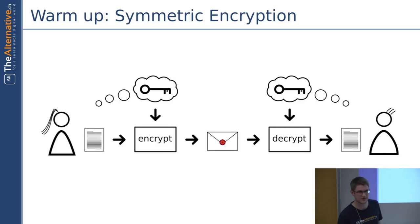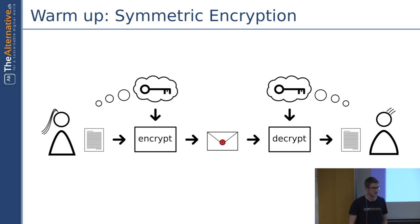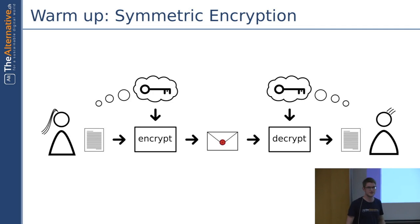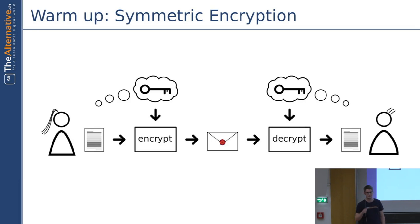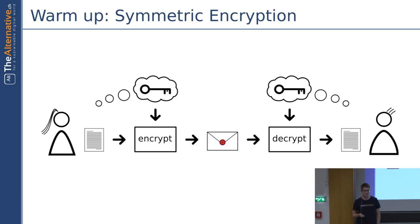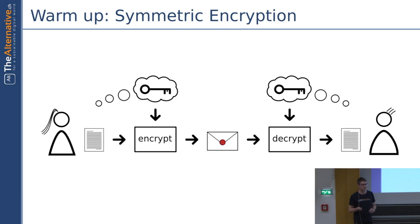Let's start with a small warm-up. What you see here is a schema which we call symmetric encryption. In symmetric encryption, we will read the image from left to right. We will start with Alice. Alice wants to send a letter to Bob on the right-hand side. Alice first sets up the message, and she also thinks of something which we call a secret key. The secret key — you can think of it just as zeros and ones, a lot of them, most of the time 200 or even more. And what she does is she takes both her message and the secret key and puts it into something which we call the encryption algorithm.